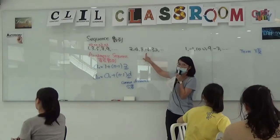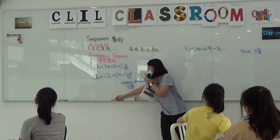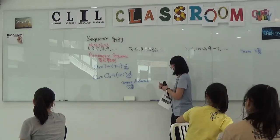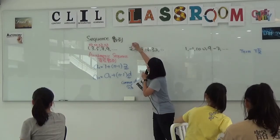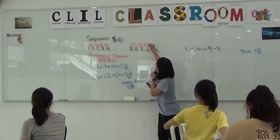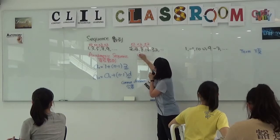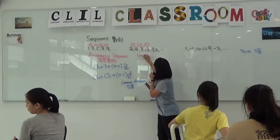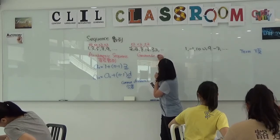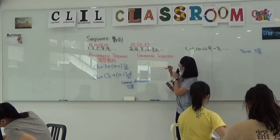Any questions? OK, then the second one. Can anyone tell me what's the rule here? Times two. Times two — so each time we multiply by two, we get the next term. For this kind of sequence, we call it a geometric sequence.